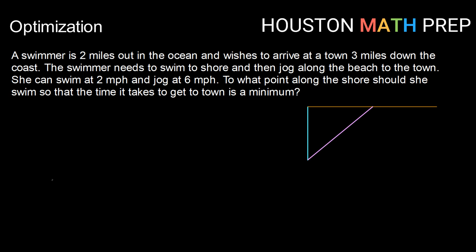A swimmer is two miles out in the ocean and wishes to arrive at a town three miles down the coast. The swimmer needs to swim to shore and then jog along the beach to get to the town. She can swim at two miles per hour and jog at six miles per hour. To what point along the shore should she swim so that the time it takes to get to the town is a minimum?